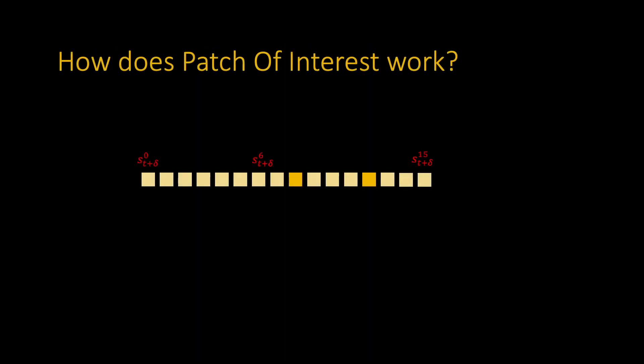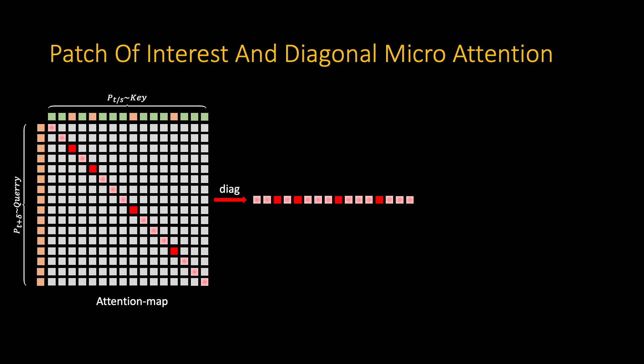Therefore, the patch of interest can detect the background and facial regions. Because of random swapping, there exist patches that might be backgrounds, so the model needs to ignore them.